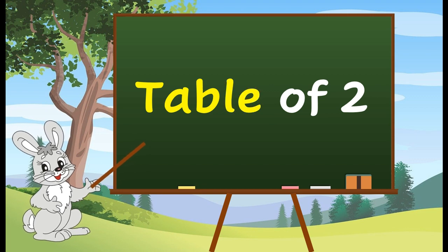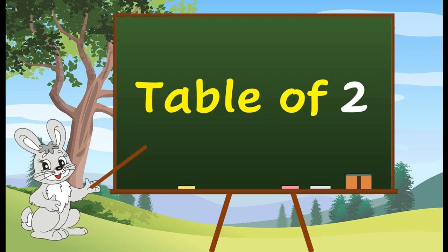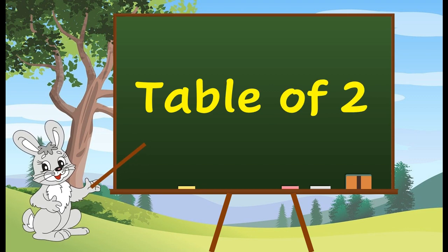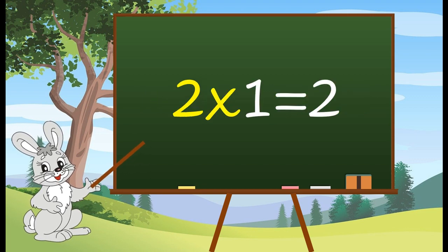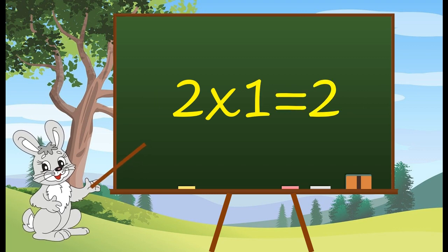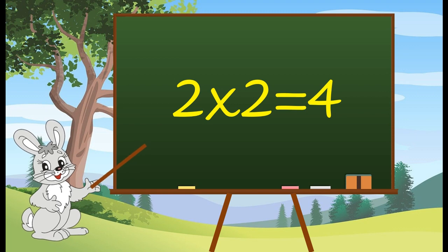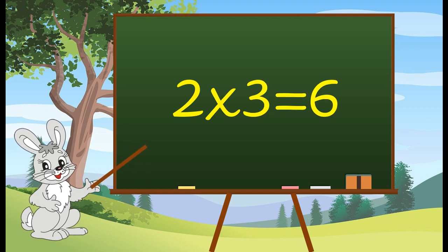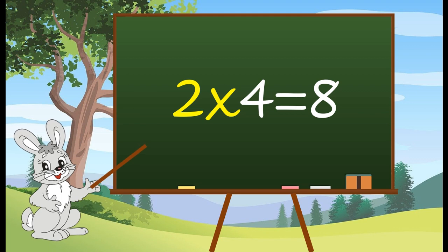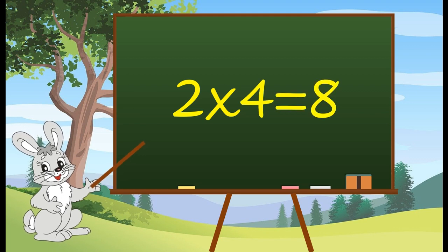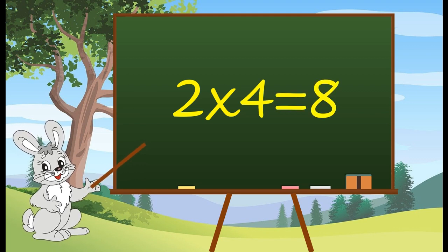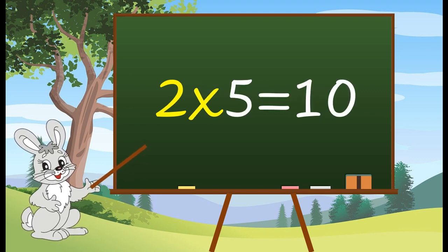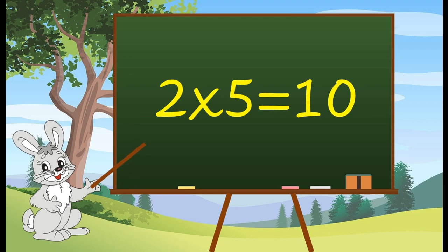Table of 2. 2 1's are 2. 2 2's are 4. 2 3's are 6. 2 4's are 8. 2 5's are 10.